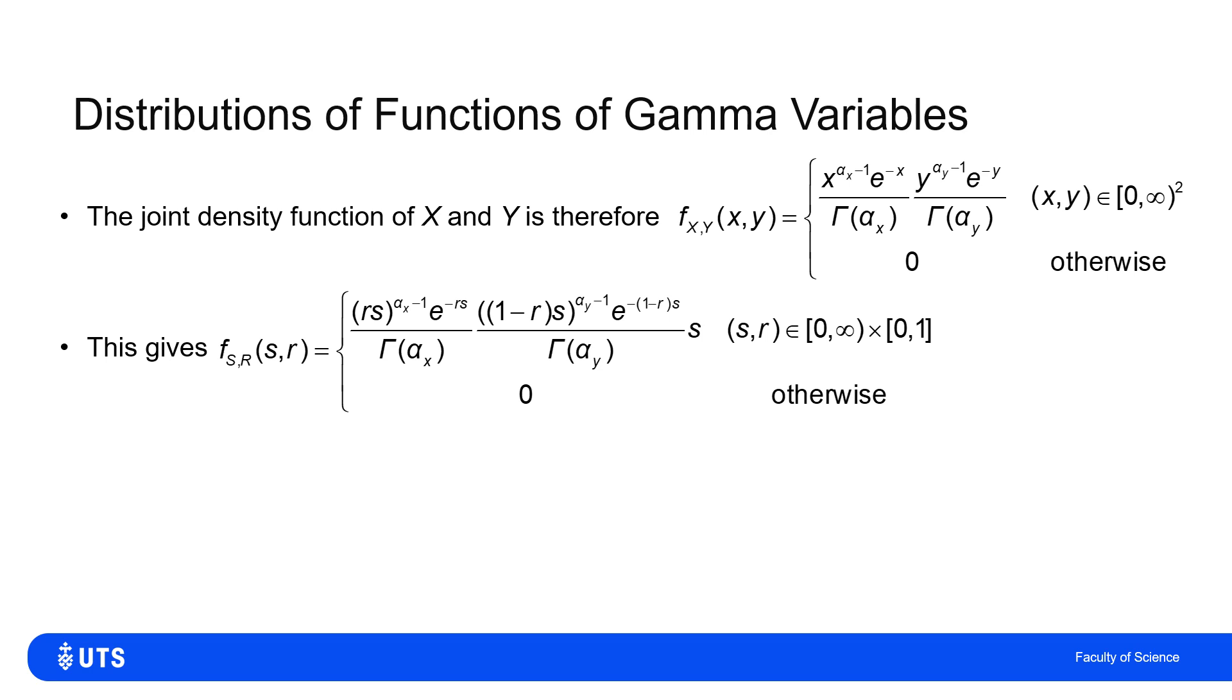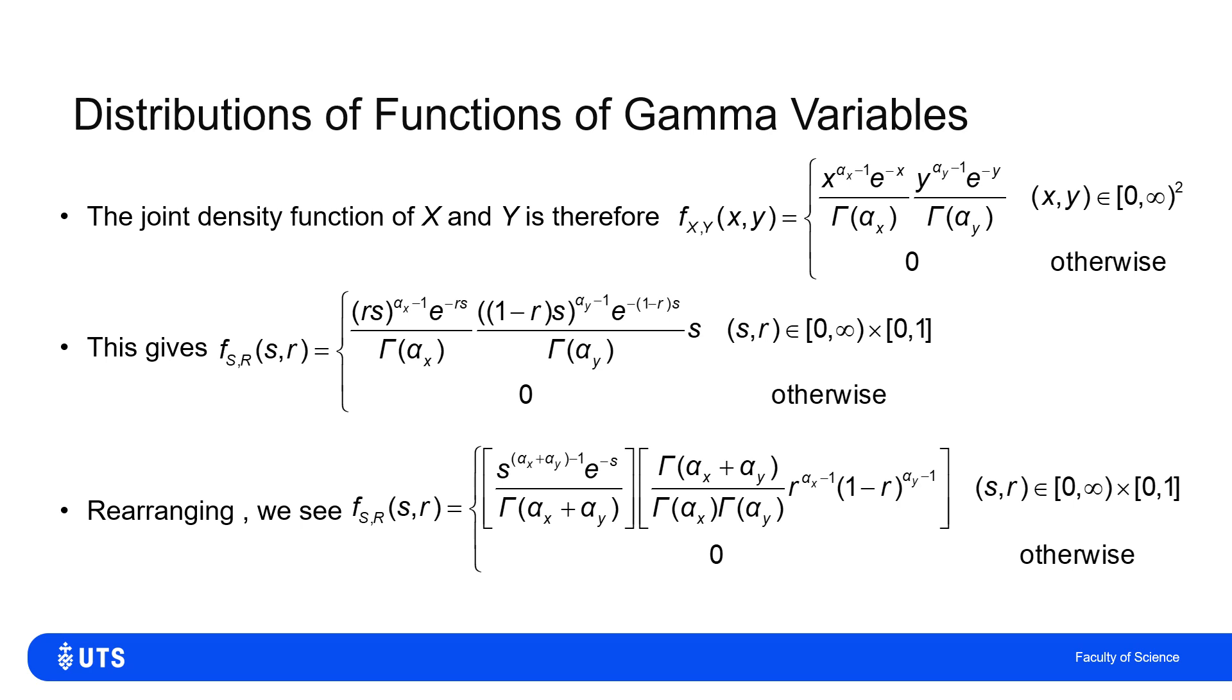If I tidy this up and rearrange it, I've done a little bit of a trick here because I've introduced another gamma constant, top and bottom, gamma of alpha X plus alpha Y, and I've introduced it on the top and the bottom of the fraction. So you can see it should sort of cancel out, but I've introduced it for a very particular reason.